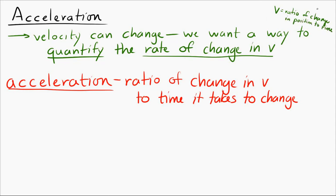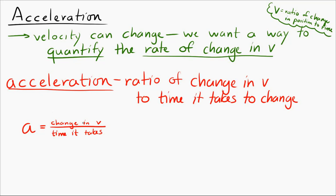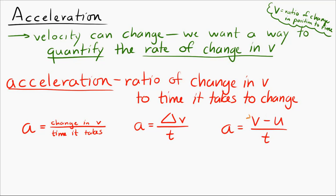Because we know it's a ratio, we can write this as an equation. Acceleration — the symbol we use is a — is equal to the ratio of the change in velocity to the time that it takes. Using delta for change: a = Δv / t, which is the final velocity minus the initial velocity, divided by the time it takes.